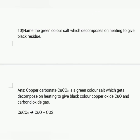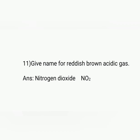Name the green color salt which decomposes on heating to give a black residue. Answer: copper carbonate, which decomposes to give black copper oxide (CuO) with liberation of carbon dioxide gas. Name the reddish-brown acidic gas. Answer: nitrogen dioxide (NO2).